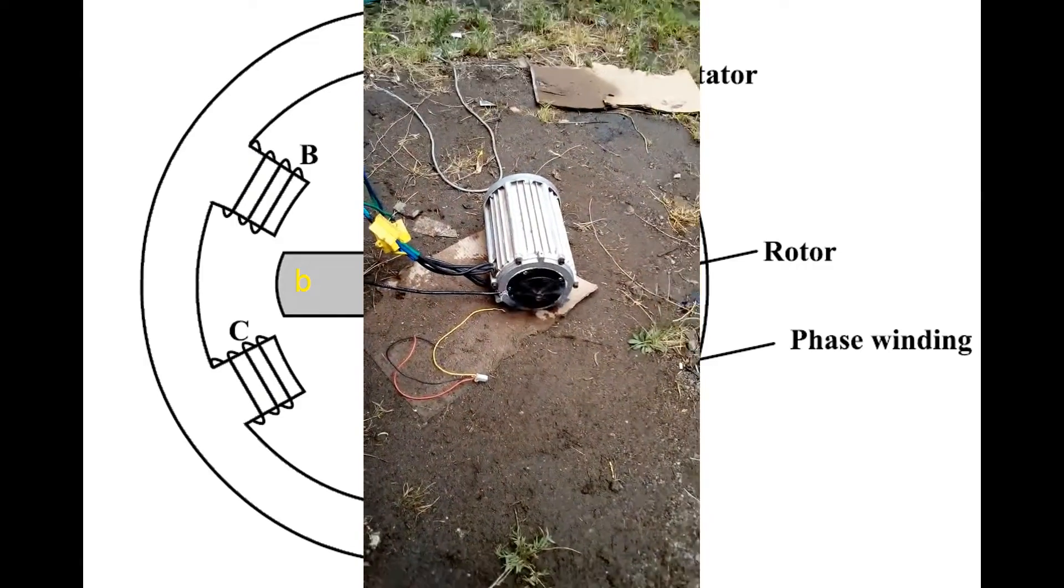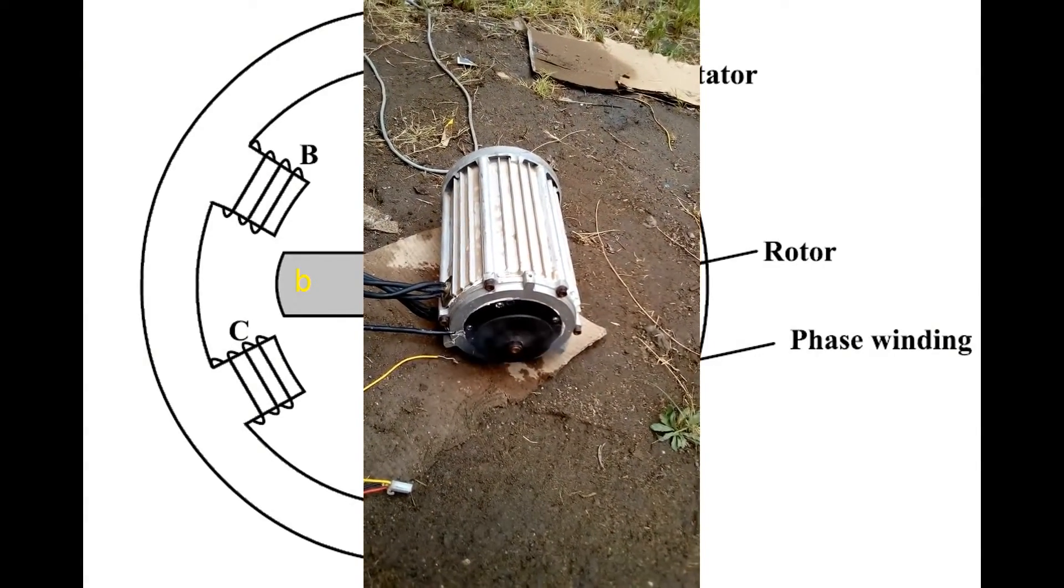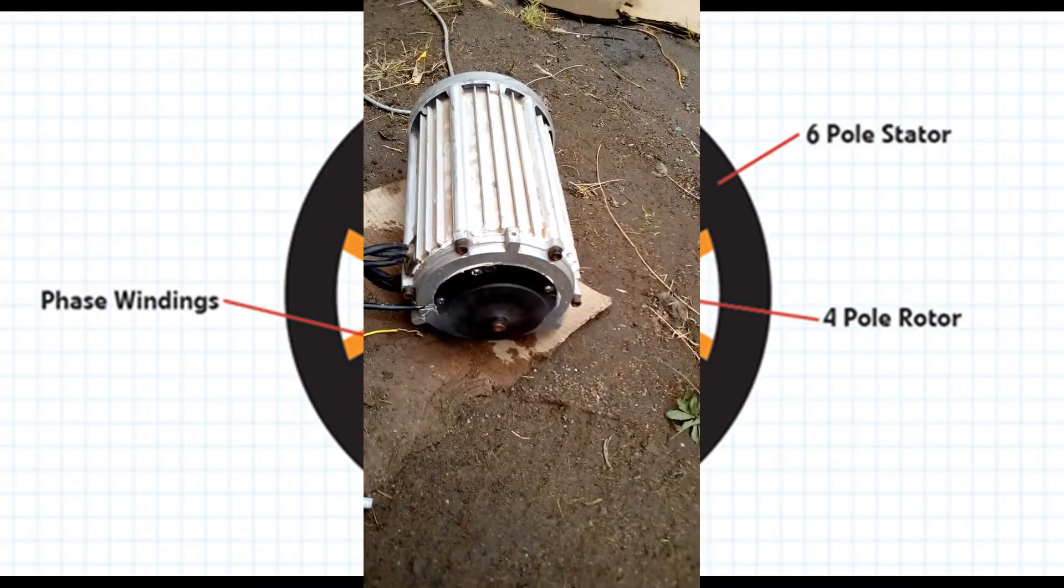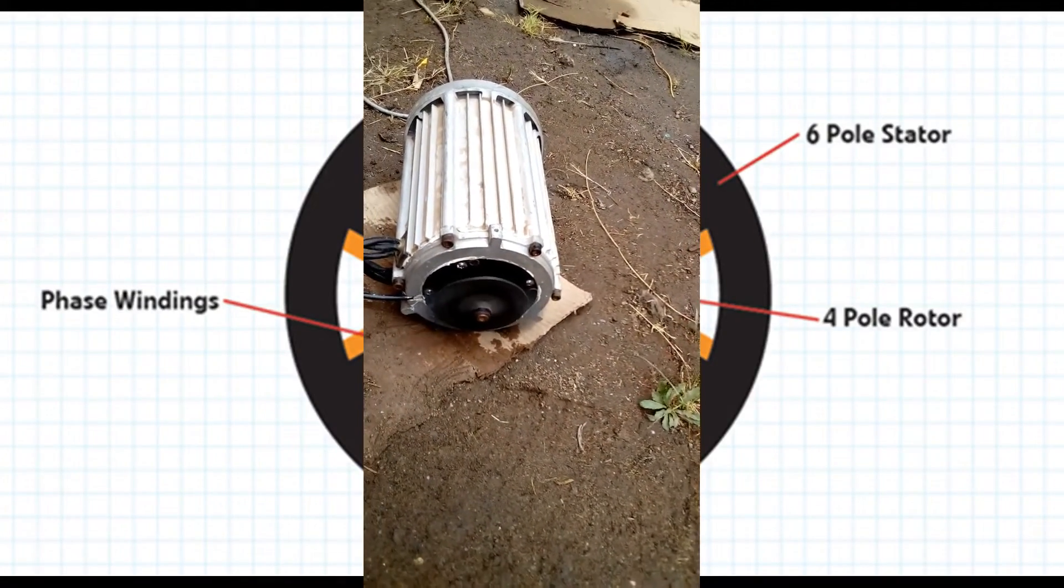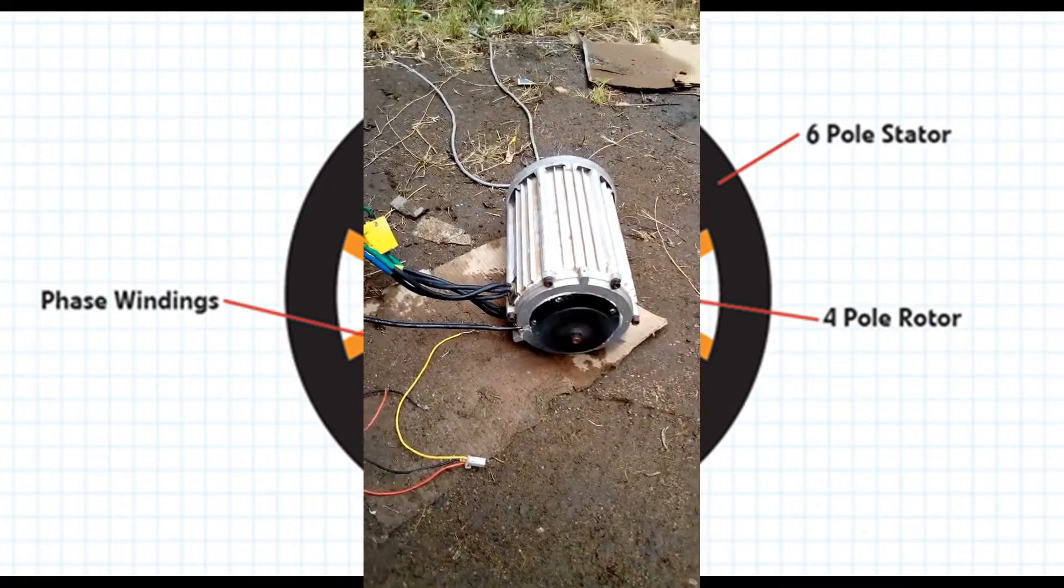Note that reluctance motors do not have a cogging torque and have a higher safety in case of a short circuit. Since the reluctance rotor has no windings or permanent magnets, the reluctance motor can be cooled well and is very resilient against high temperatures.